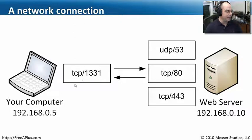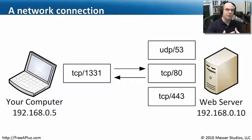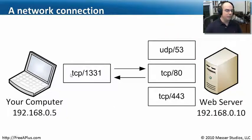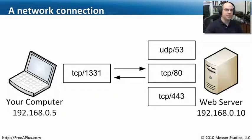The web server sends the response back to me at this IP address over this TCP port number. All of these numbers working together — you can start building very complex flows of communication back and forth. This allows every computer communicating to every web server using different port numbers to all be in a separate world, so web servers can keep track of who made the request and how to get the response back. It's the combination of IP addressing and port number that allows us to do that.